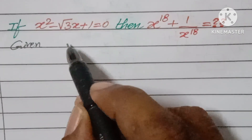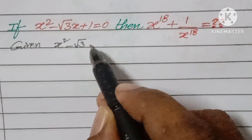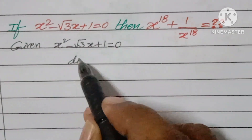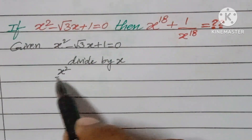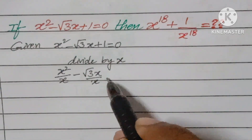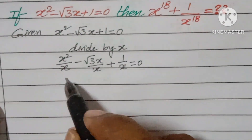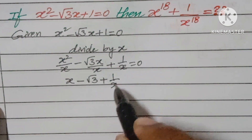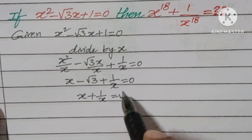This type of problem has many variations, but this one is somewhat logical — that's why it was selected. Given x² - √3·x + 1 = 0, divide the entire equation by x. You get x - √3 + 1/x = 0, which gives x + 1/x = √3.